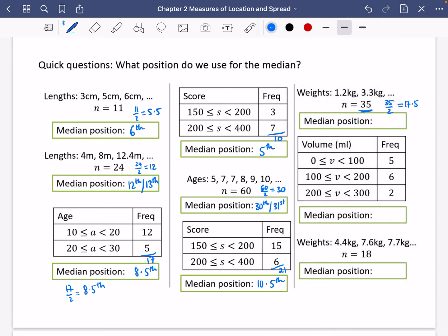And if it's a decimal, it says to round it up. So it's going to be the 18th. And then for this one, 5, 6 and 2, that adds up to 13. So n is 13. And 13 divided by 2 is just 6.5. So it's 6.5. No rounding required, because it's in a table.